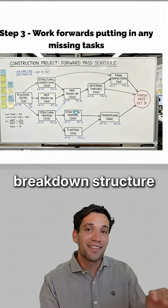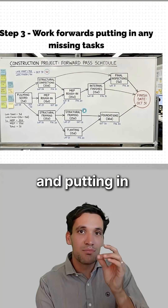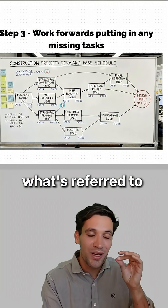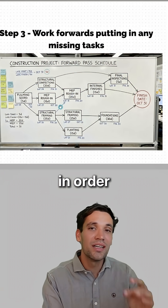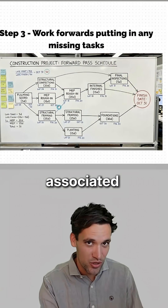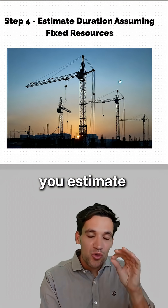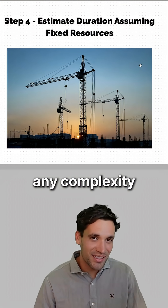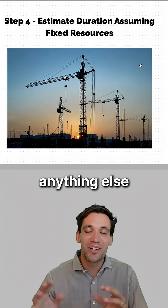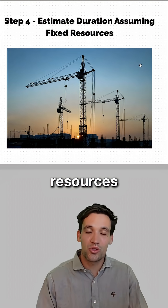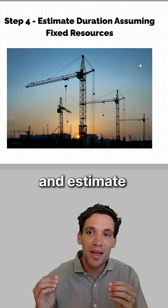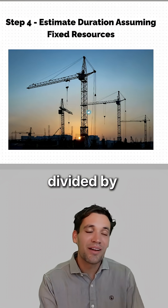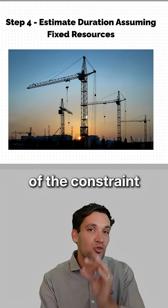You then go through your work breakdown structure working forwards, putting in all the missing tasks so all tasks are captured in what's referred to as a network schedule — all tasks are in order, but without durations yet. The next step is to estimate duration, assuming fixed reasonable resources. Don't get into any complexity about resource linkages — just assume reasonable resources, what you're most likely to have on the project, and estimate the durations.